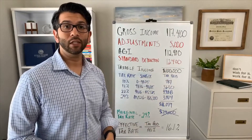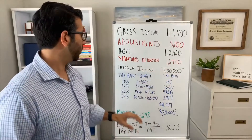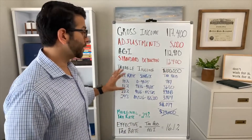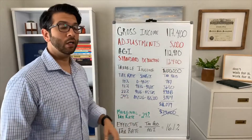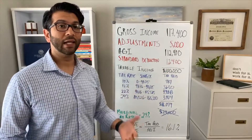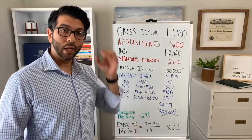So we had gross income, deducted adjustments, arrived at AGI, minus the standard deduction, arriving at $100,000 of taxable income. Now in our tax system here in America, not every dollar is taxed the same.